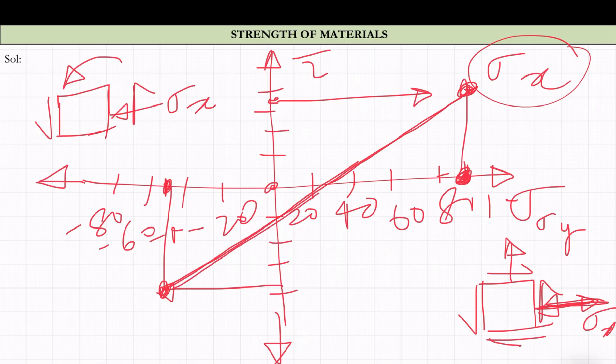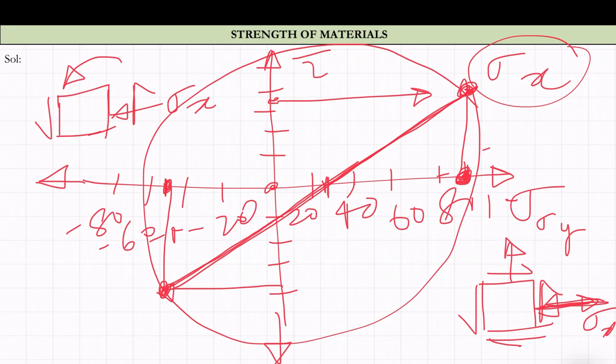Joining this line will give the diameter of the circle. The center we have already found is at about 25. Now nothing is left — just join these two points and you will get the circle. This is our required Mohr's circle. In this way I have tried to explain the steps; now let us see the solution.